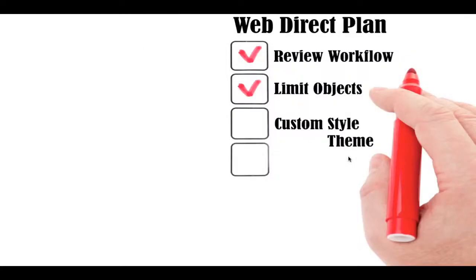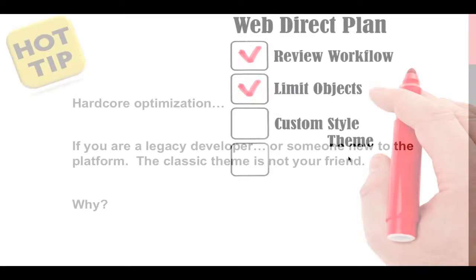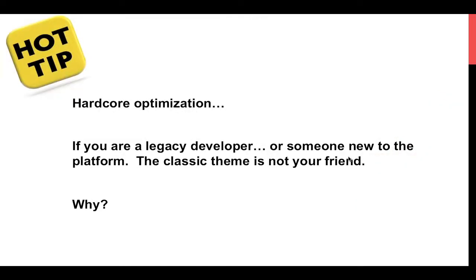So our overview plan: we started at high altitude reviewing workflow, we're limiting our objects. Now we get into custom themes and shared styles — this is really where the rubber meets the road for hardcore optimization. If you're a legacy developer or someone new to the platform, the classic theme is not your friend.